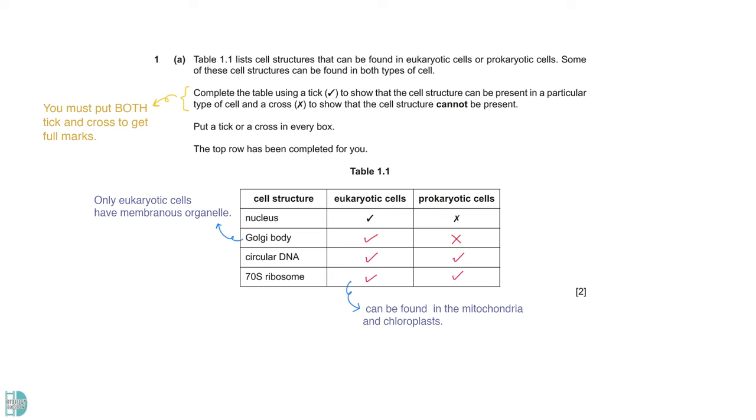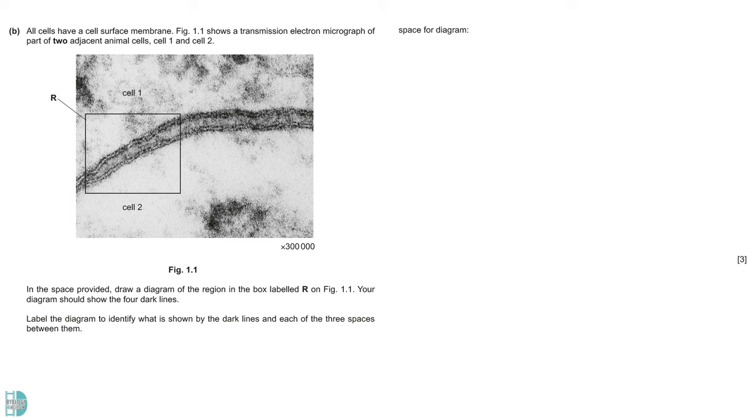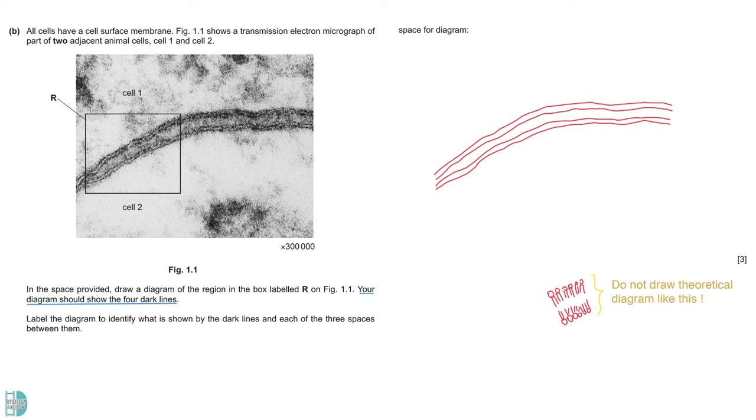In B, we have an electron micrograph of two adjacent animal cells. You have to draw a diagram of the region in the table labeled R on the figure. Please pay attention to the instructions here. You should use four dot lines and then label them. This is how your diagram should look like. Do not draw theoretical diagrams of cell surface membranes as that is not what the question asks. Then, label the phosphate head represented by the lines and the fatty acid tails between the lines. The space between two cells is the intercellular space, which contains tissue fluid.